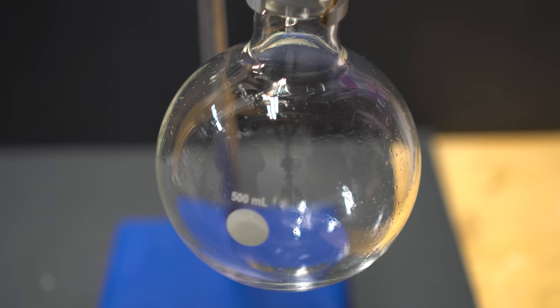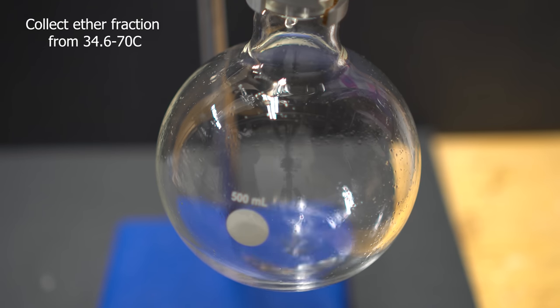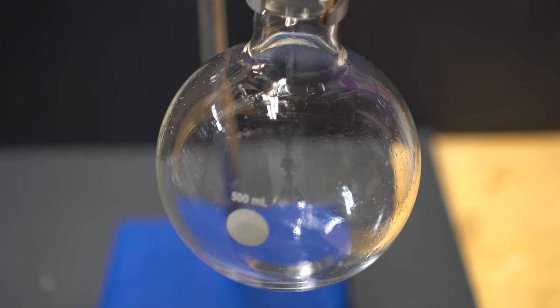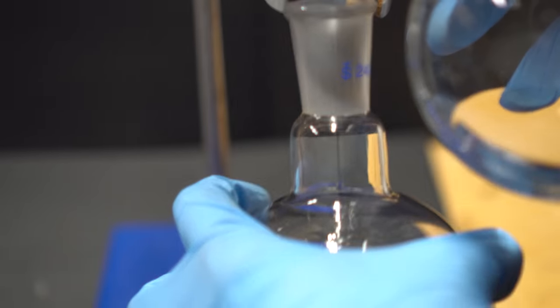Here you can see some ether that came over and it is below its boiling point so it might be confusing when you first see it. Ether boils at a temperature of about 35 degrees Celsius and you're going to collect everything up until about 70 degrees Celsius.